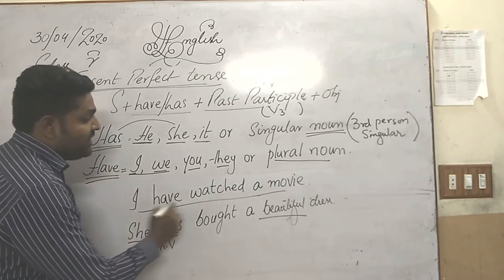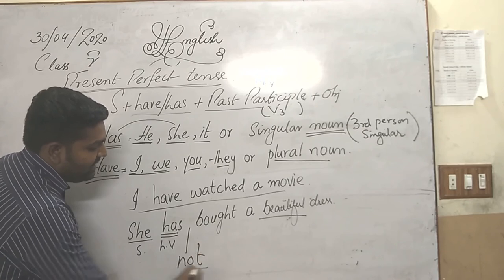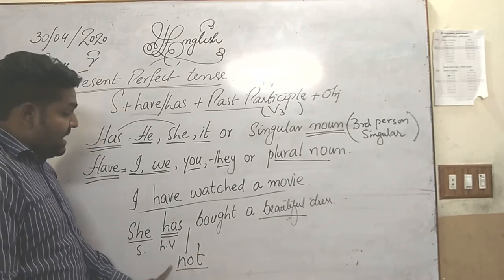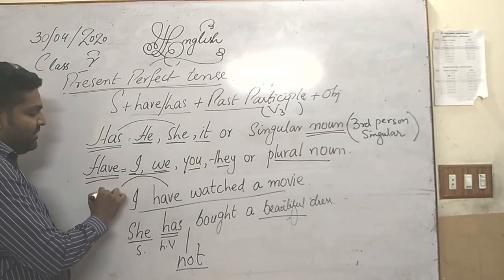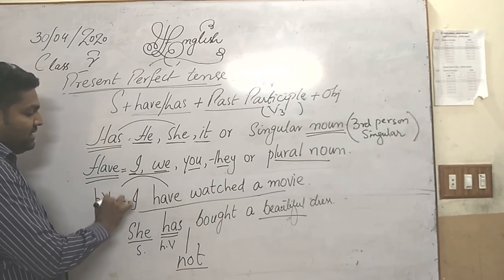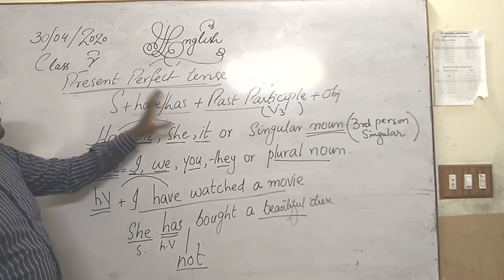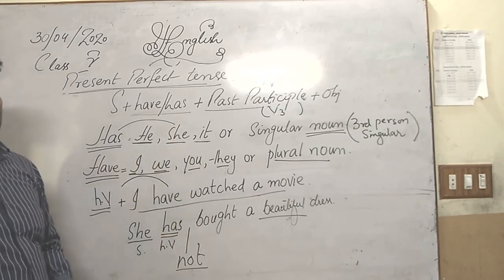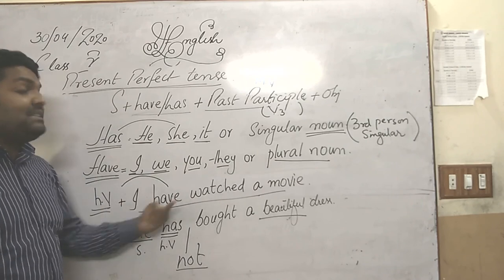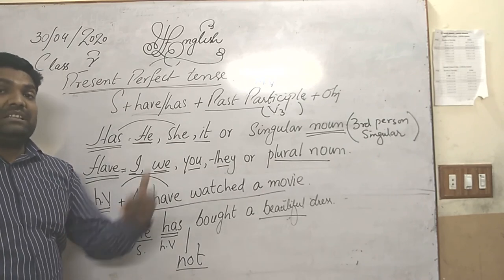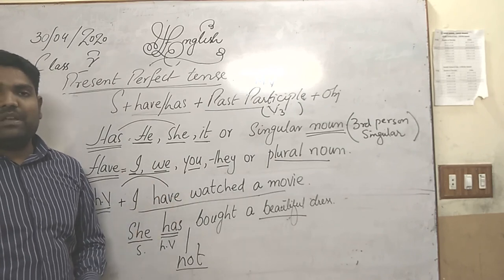Whenever you want to make a negative sentence, always use 'not' after the helping verb. And if you want to make an interrogative sentence, just put your helping verb before the subject and it will be changed into interrogative. What you need to do is practice the sentences — write them down and change them into negative and interrogative. In this way, you will be able to make sentences in both negative and interrogative forms. Thank you very much.